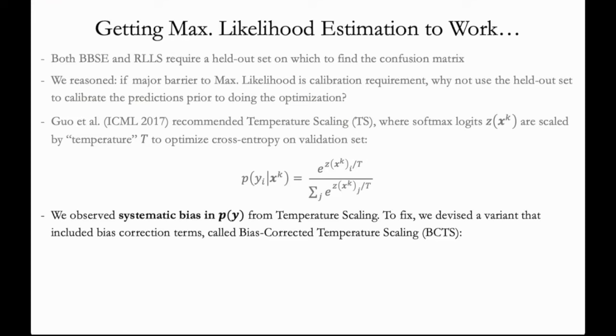To fix this, we devised a variant of temperature scaling that includes bias correction terms, which we call bias-corrected temperature scaling, or BCTS. And the formula for BCTS is as shown. We also explored other types of calibration that confirmed our hypothesis that bias correction was important. But due to time constraints, I'm only showing BCTS in this video.